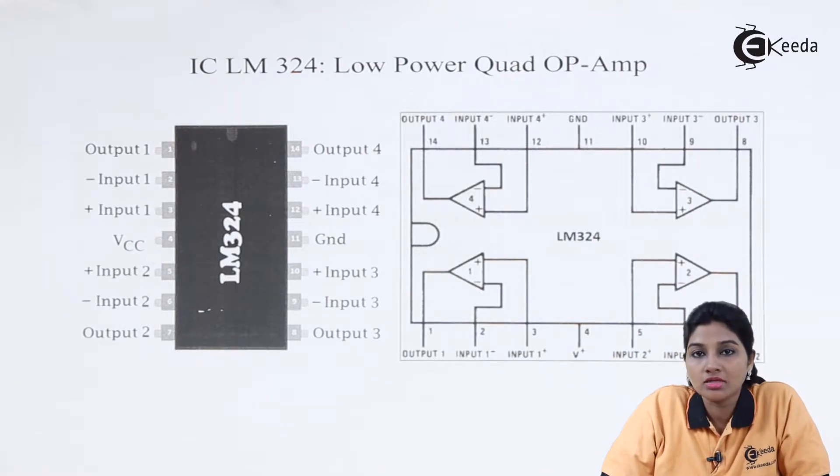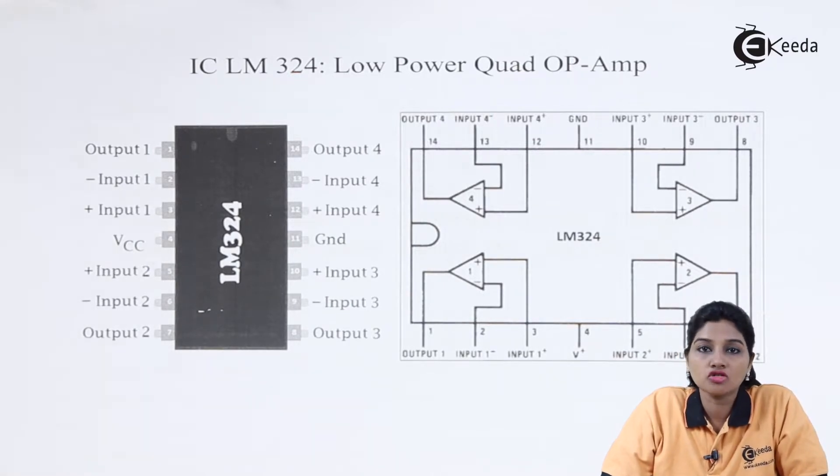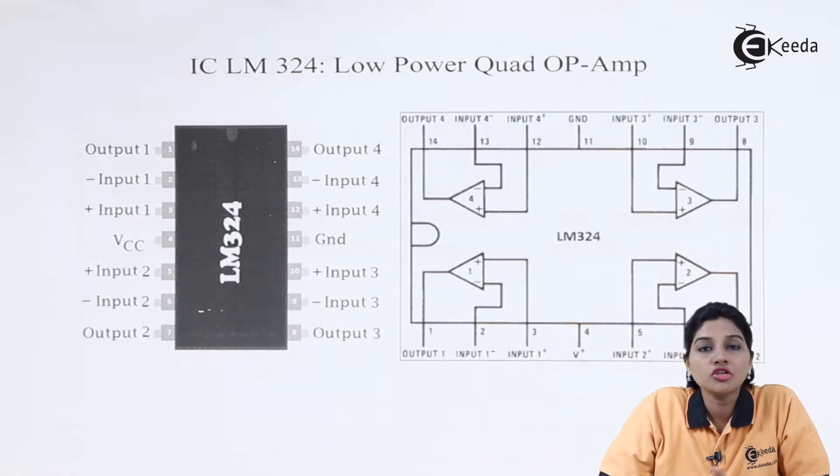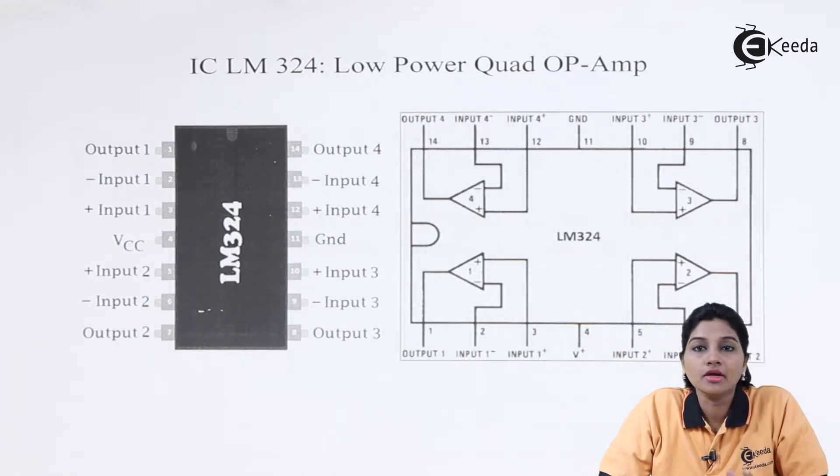The IC can operate on a single power supply which provides a wide range of voltage from plus 3V to 32V, whereas the same IC can operate on dual power supply having a range of plus minus 1.5V up to plus minus 16V. So the conventional op amp circuits which can be implemented by using IC741 can also be implemented by using IC LM324. Now let's see some of the features of IC LM324.